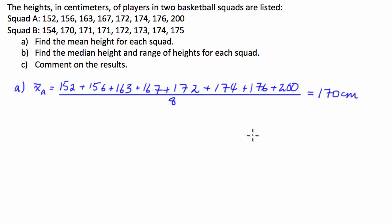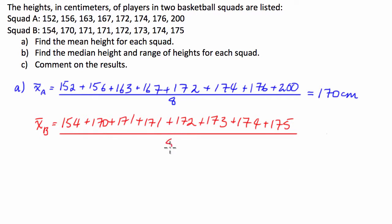So we're going to find the average of B. We've got X with a dash on top for B, is equal to exactly the same method. We add all the numbers together. 154, plus 170, plus 171, plus 171, plus 172, plus 173, plus 174, plus 175. And then we divide all that, again, by the same number of players, 8. And we get, again, 170 centimeters. So we are able to get the same averages for two completely different sets of data. That's basically what we're going to have to comment on at the end. We're going to have to explain why.